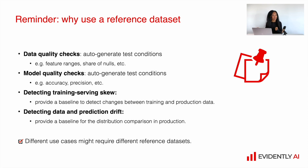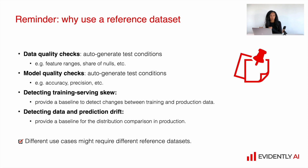If out of the blue the share of missing values decreased, it can also be a signal of some issues. Together with auto-generated test conditions, we can benefit from the reference dataset by detecting training-serving skew — providing a baseline to detect changes between training data and production data — and we can detect data and prediction drift by comparing the distributions of training data and model output with the distributions from the reference dataset.